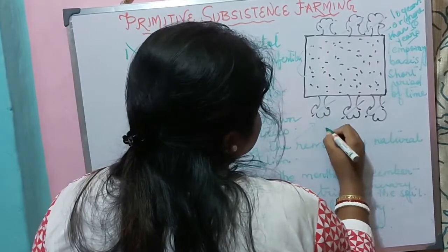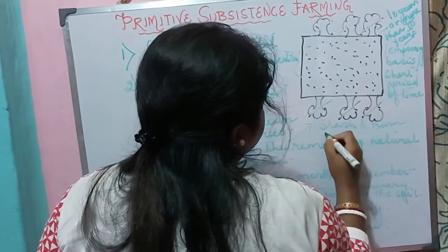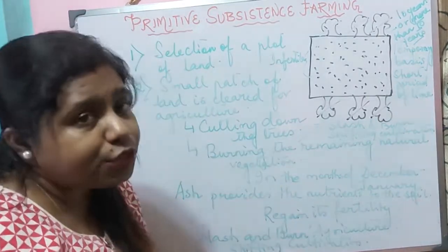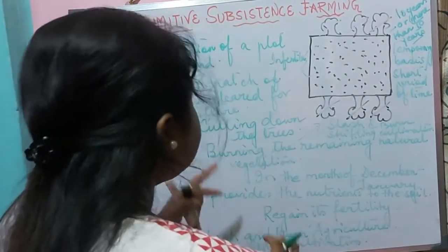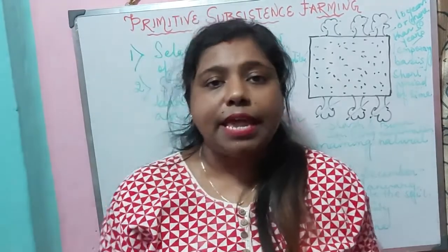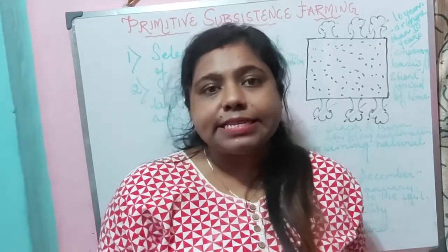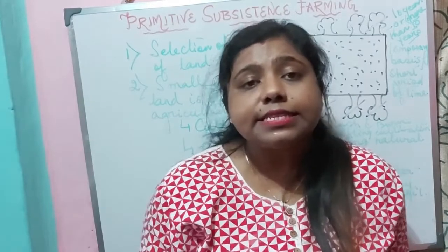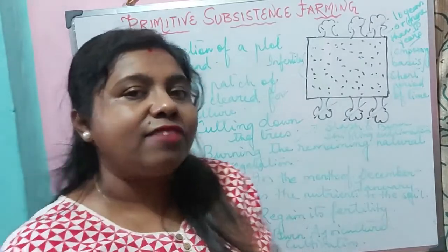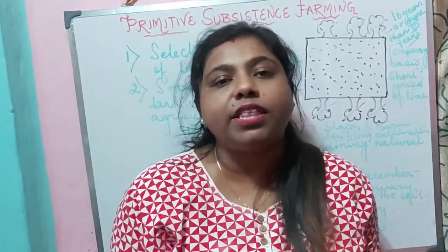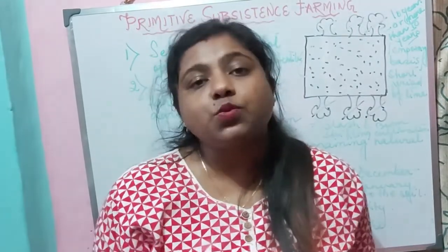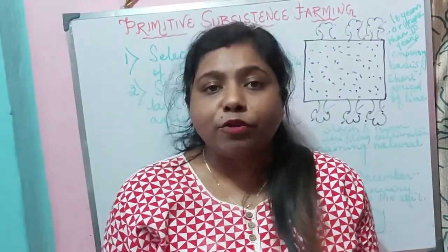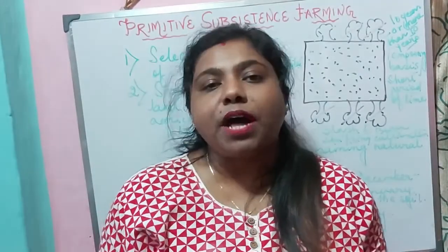So there are two other names for this farming: slash and burn and shifting cultivation. This primitive subsistence farming is known by different names in different parts of the world and in India. In India, it is known as Jhum in the northeastern states, where this type of farming is predominantly practiced even today because of the large forested areas and large tribal population there.